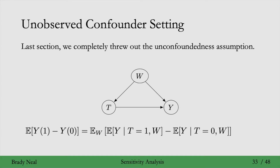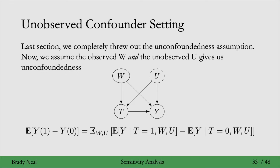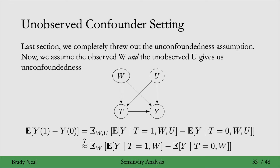In the last part of the lecture, we completely threw out the unconfoundedness assumption and considered other weaker assumptions that allowed us to identify intervals rather than points. In the sensitivity analysis part of the lecture, we will still assume unconfoundedness, but now we're going to assume unconfoundedness given both the observed W and the unobserved U. So this means that we have to adjust for both W and U in the adjustment formula.